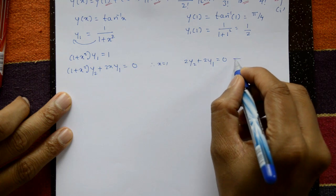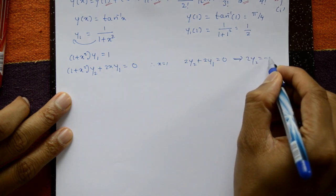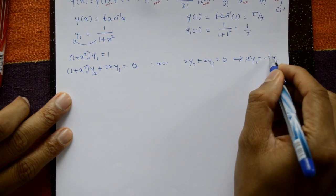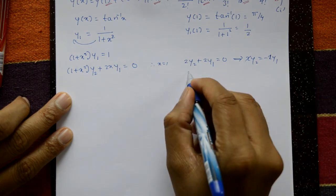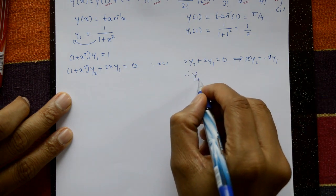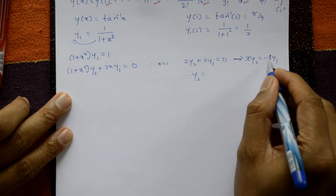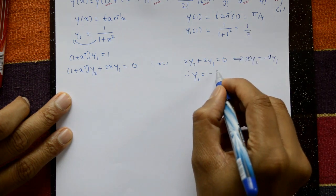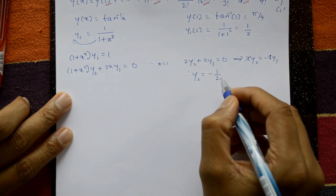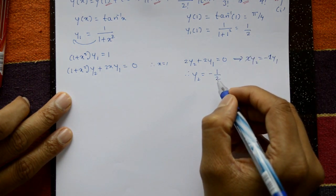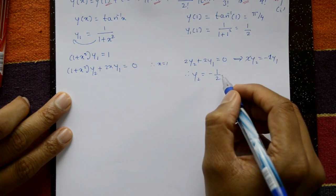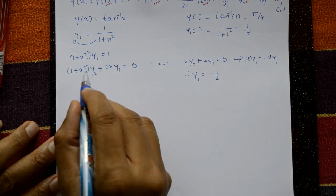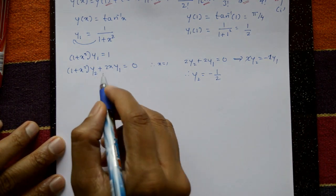From 2y₂ = −2y₁, the 2's cancel, so y₂ = −y₁. Now y₁(1) = 1/(1+1) = 1/2, therefore y₂(1) = −1/2.